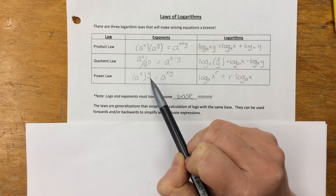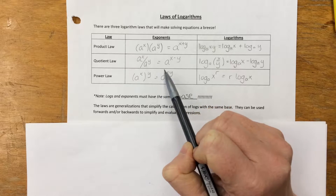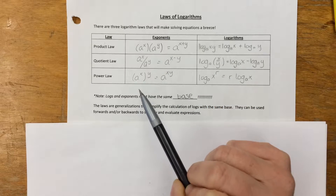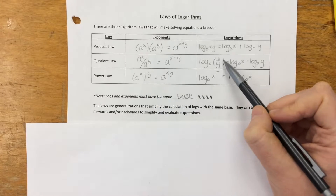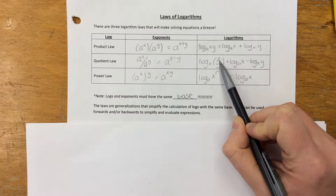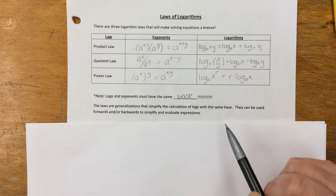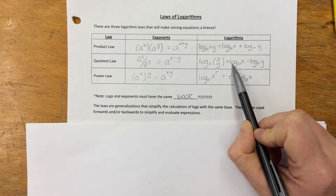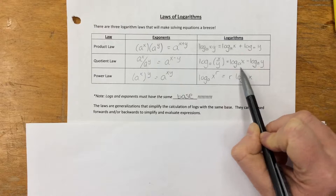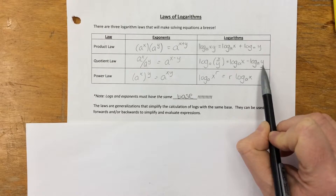The quotient law for exponents is that a to the power x divided by a to the power y means that you subtract the exponents. With logarithms, if you have a division, then you take the same base and you subtract: log base a of x minus log base a of y. Or, if you're given log base a of x minus log base a of y, as long as they have the same base, you can turn that into a single logarithm where you're dividing x by y.